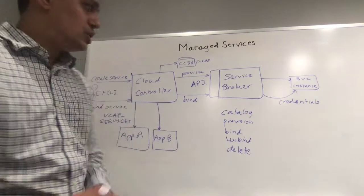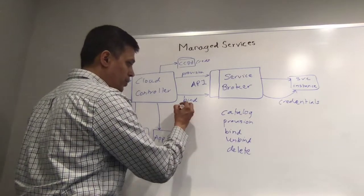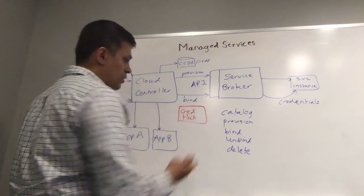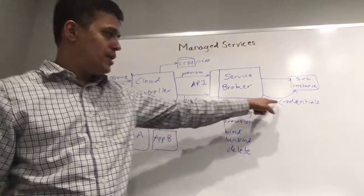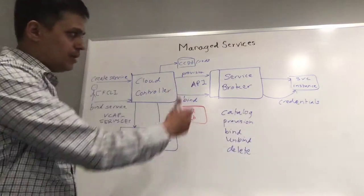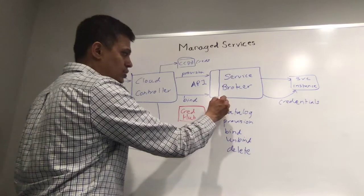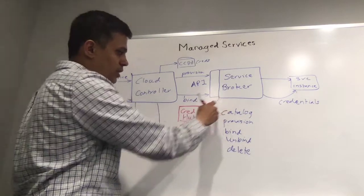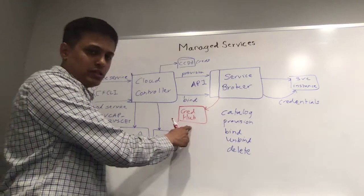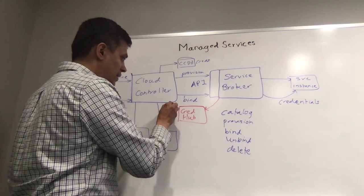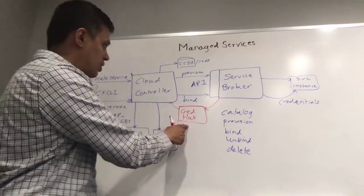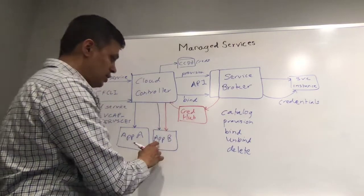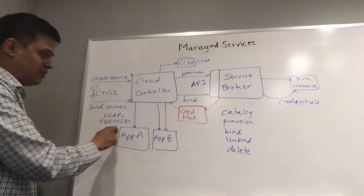PCF 2.0 solves this security problem by introducing a new component called CredHub. When the bind command is issued, the credentials are created or reused depending on the service broker implementation. But instead of giving those credentials back to the cloud controller directly, the service broker stores them into CredHub. CredHub then gives a reference entry to the CredHub record to the cloud controller, and that CredHub reference entry is ingested into the application using the same VCAP_SERVICES mechanism.